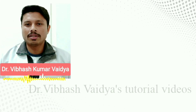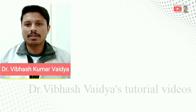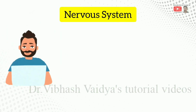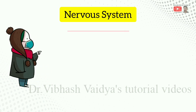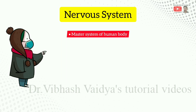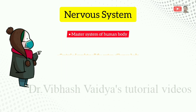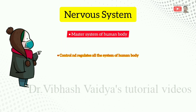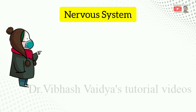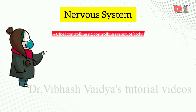Hello everyone, I am Dr. Vibhash Kumar Ved and today in this video we are going to discuss about the Nervous System. The Nervous System is a Master System of the Human Body because it controls and regulates all the systems of the human body, and it is also the Chief Controlling and Coordinating System of the body.